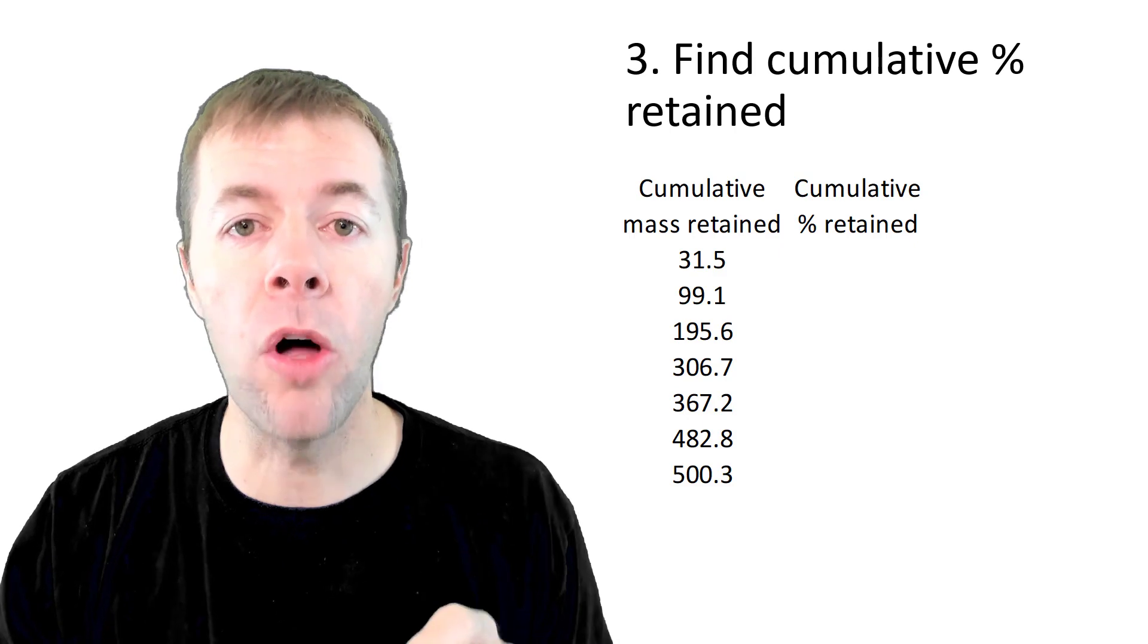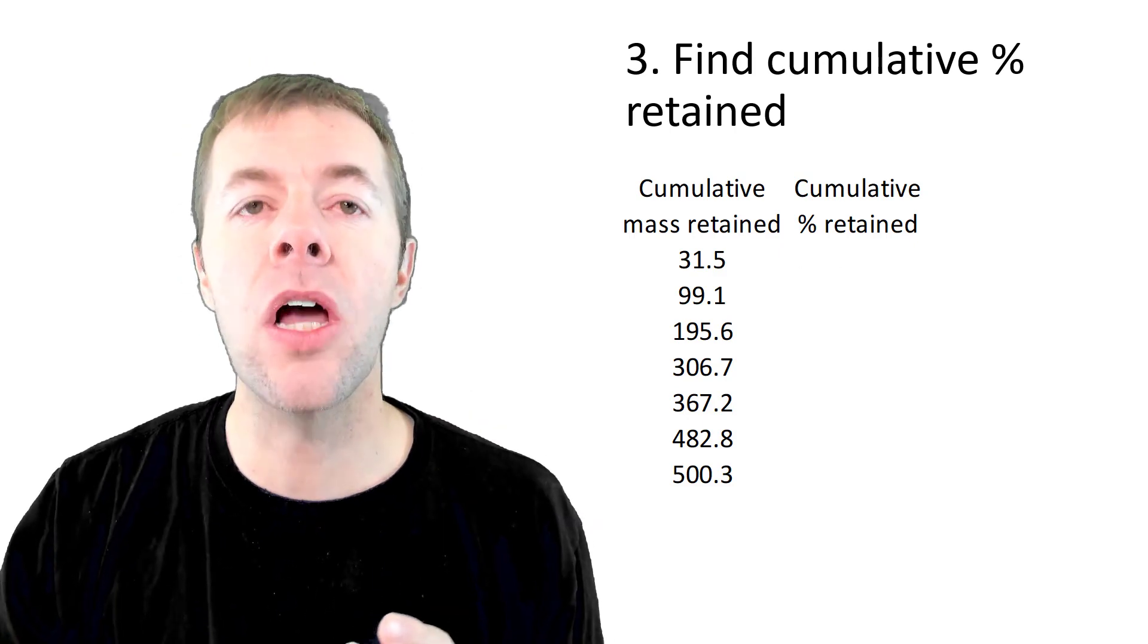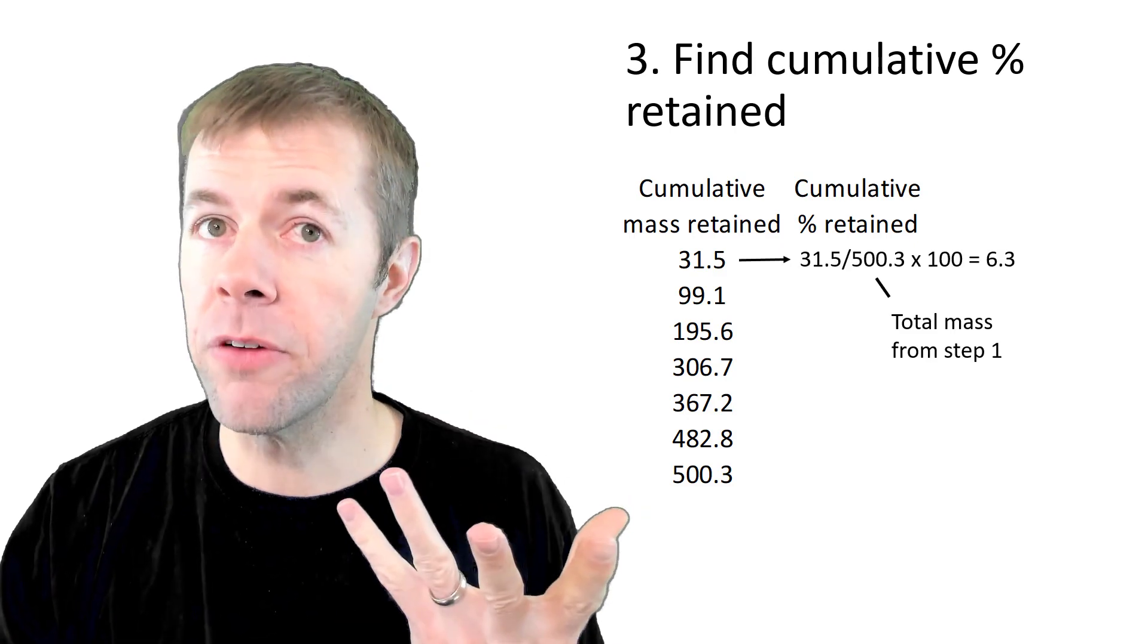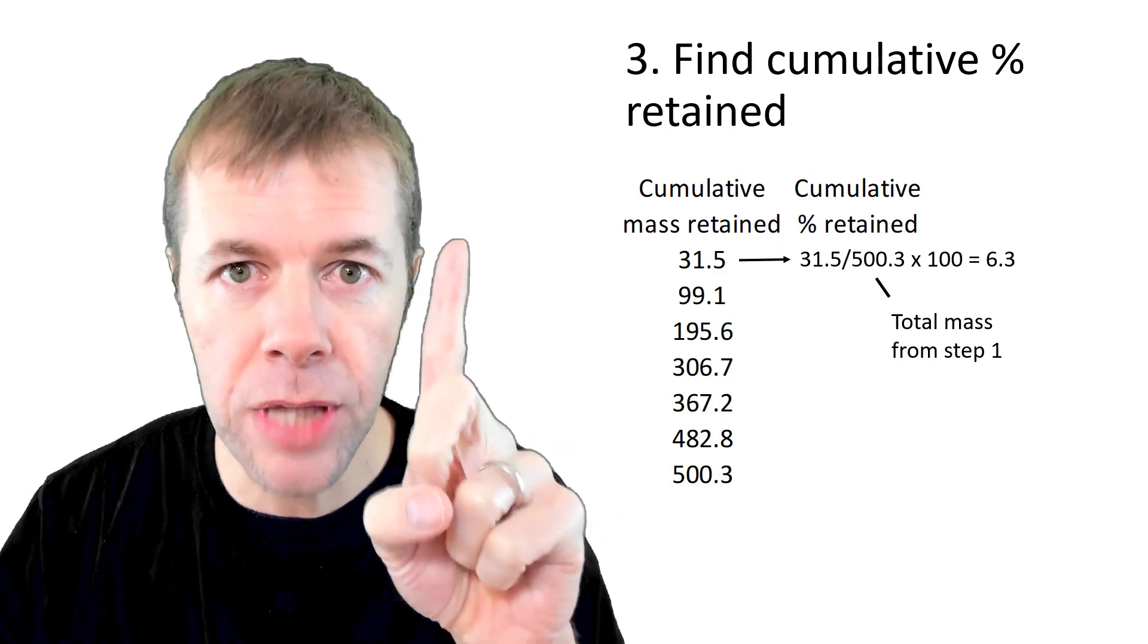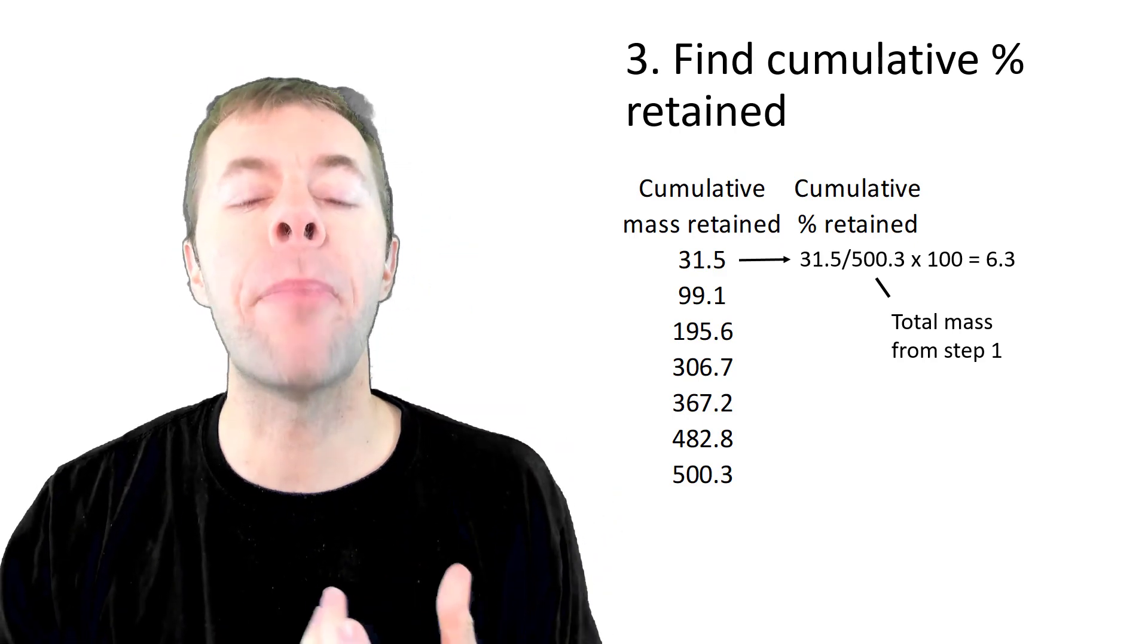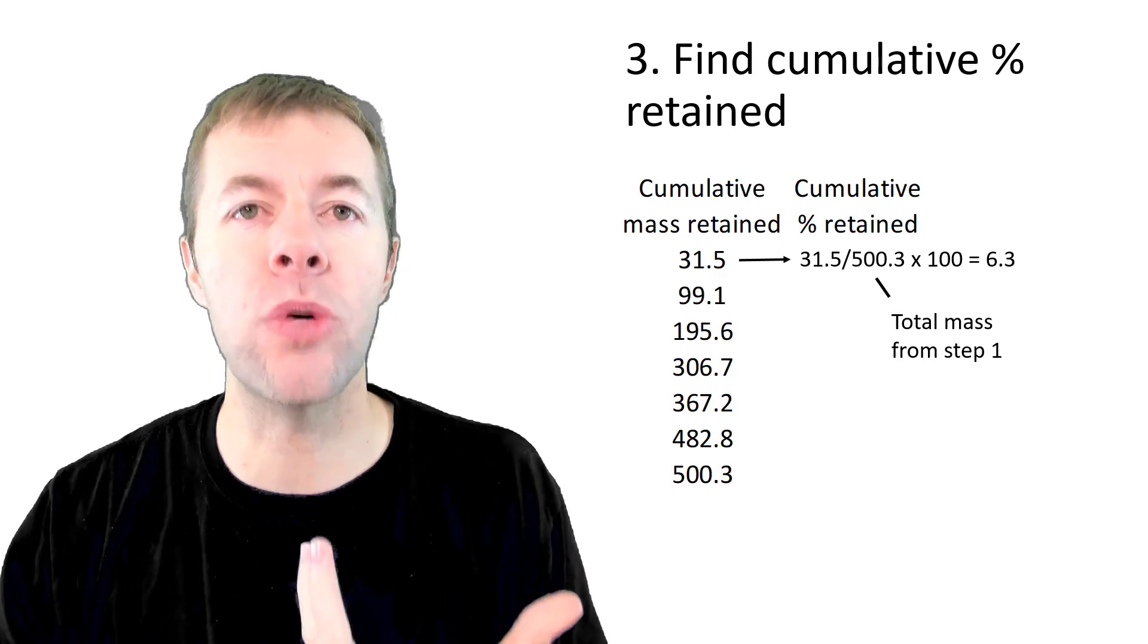I'm going to take that previous column that we just calculated, take 31.5 that's coming from that value right here, and divide it by the total mass. That's from step number one. Multiply that by a hundred and I get 6.3 percent.